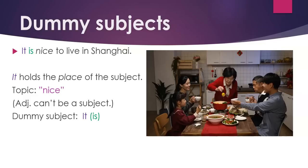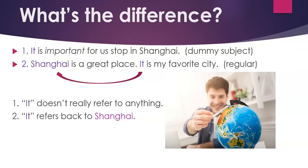Here's another example: 'It is nice to live in Shanghai.' It holds the place of the subject. The topic is nice, but that's an adjective, and an adjective can't be the subject of the sentence. So we need to use the subject it, followed by is, or a word like is.